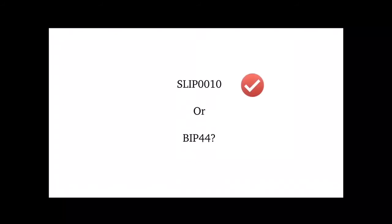If your CoolWallet S gets damaged or is lost and you need access to your funds quickly, then if you use the SLIP-0010 address, you will be able to recover your seeds to one of the Kinesis software wallets and access your funds. If you use the BIP-44 address, you will be able to recover the seeds, but as the generated addresses will be different, you won't be able to access the funds.